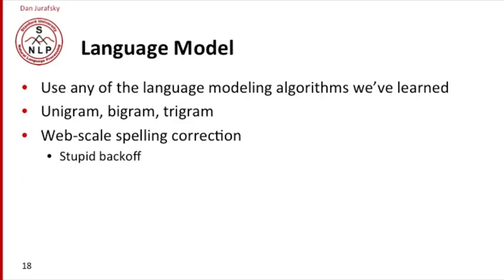We've seen candidate generation. Now we're ready to talk about how to rank the candidates. Remember, there are two factors: the language model and the channel model. Now the language model, we can use any of the language modeling algorithms we've already learned. We can use unigrams and bigrams and trigrams.